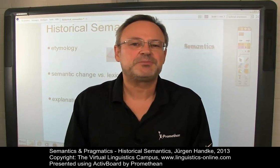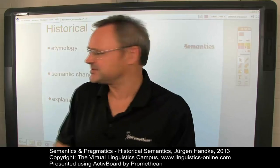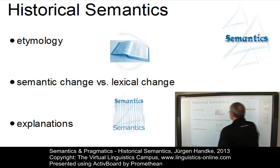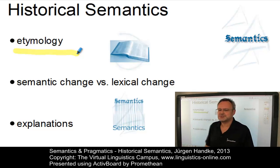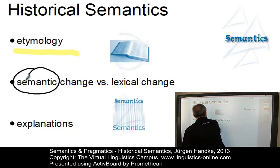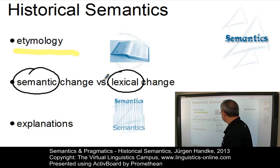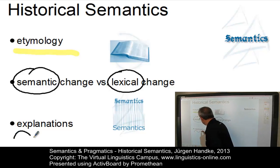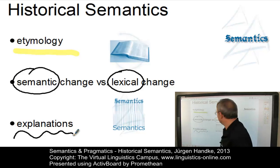In the following we will discuss the main aspects of change in meaning and vocabulary. That is, we will look at the main principles of historical semantics. We will deal with etymology, that is, the history of individual words. We will define processes of semantic and lexical change. And last but not least, we will look at the explanations that are given for these changes. So let's start with etymology.